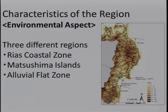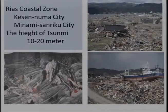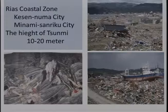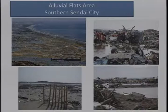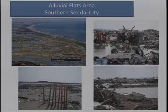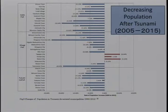The area is geographically very different — Ria's coastal area and alluvial flat. In Ria's coastal area, the solution is rather easy: go to the upper area. But in the alluvial flat, we have to find a place to survive in a higher area, and there is no place to escape. So we didn't have any experience for those areas on how to reconstruct a safe place to live.